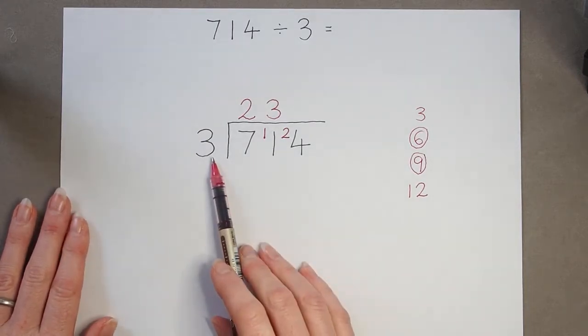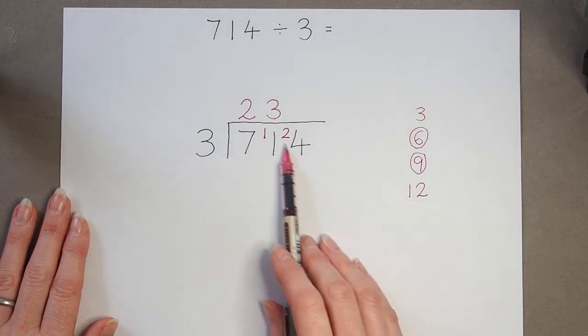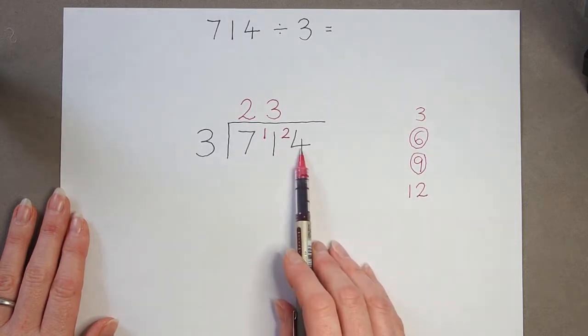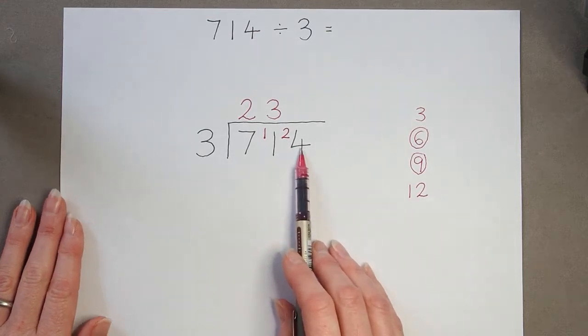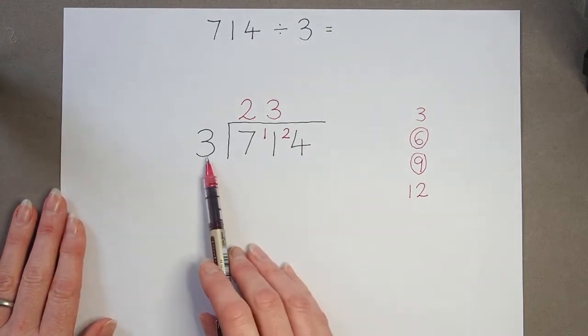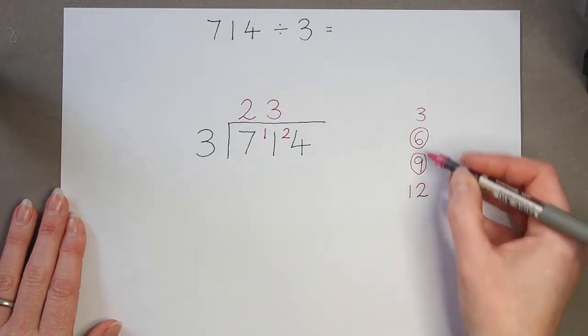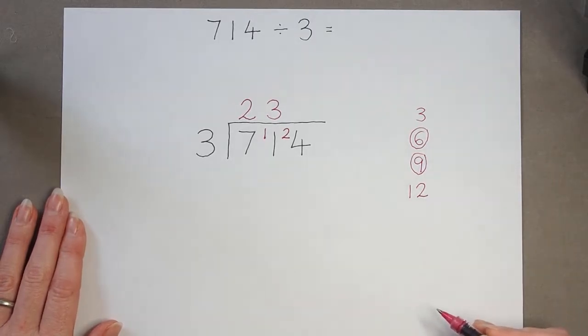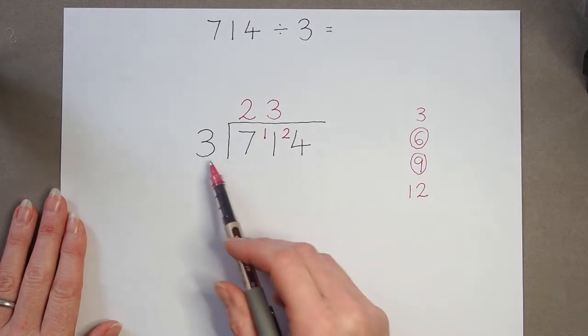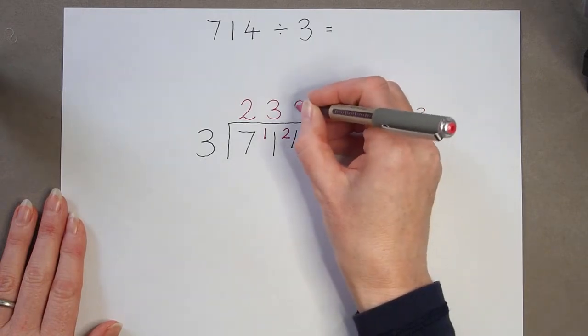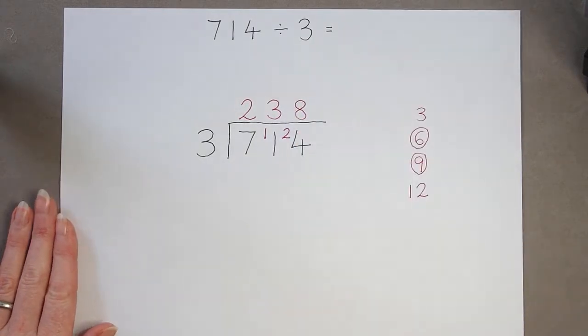Now I can finish off my calculation by looking at this last number. And it's not 4 now, it's 24, because of my remainder. 24 divided by 3. Well, I know my 3 times table. I could keep going if I wasn't sure of my 3 times table, but I know that 3 times 8 is 24. So 24 divided by 3 is 8.